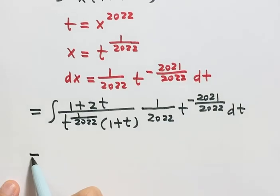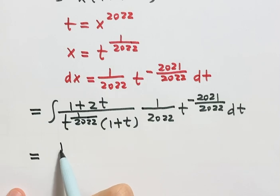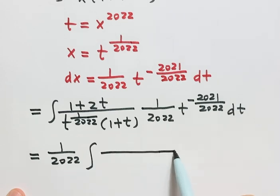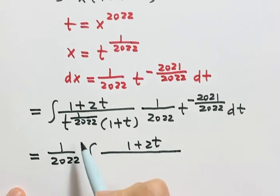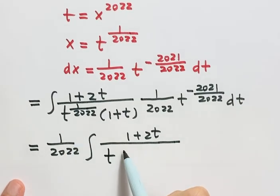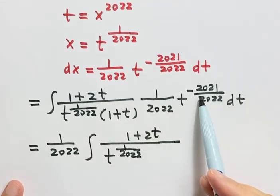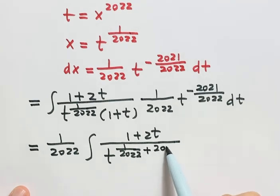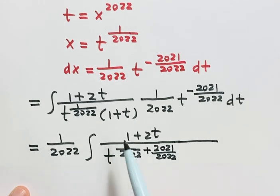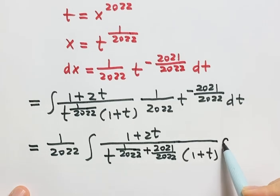Let's simplify. Take the constant 1 over 2022 out front. On top we have 1 plus 2t. Because the t to the power 1 over 2022 from dx has a negative power, we move it to the bottom and combine the exponents, giving 2021 over 2022. The last term is 1 plus t, then dt.